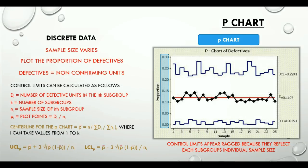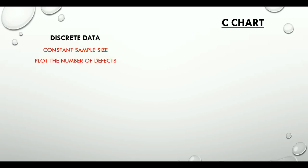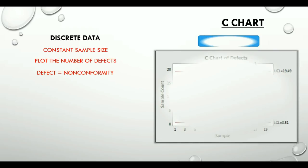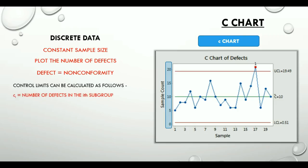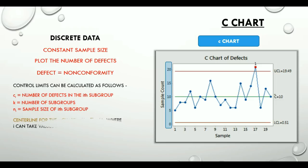Moving on to the C chart — this chart is used when the sample size is constant and it plots the number of defects. A defect is a non-conformity. So a defective unit is a non-conforming unit, and a defect is a non-conformity. If you look at the y-axis on the sample C chart, it shows the number of defects. To calculate the control limits, we need CI — the number of defects in the ith subgroup — K, the number of subgroups, and NI, the sample size of the ith subgroup. The centerline of the C chart, C-bar, is equal to the summation of CI divided by K, where I takes values from 1 to K.